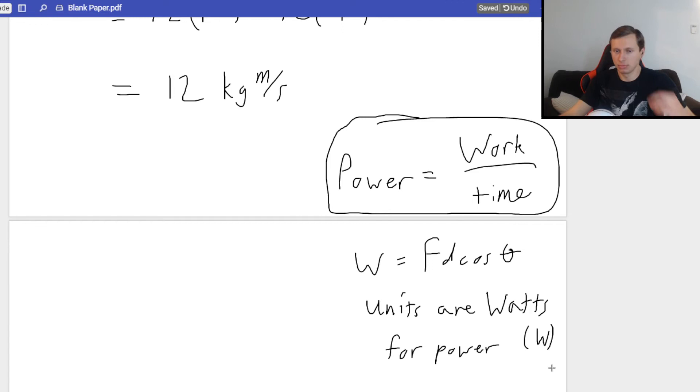Capital W, which is the same variable we use for work. Yes, it's very confusing. Okay, any questions on power? Okay, back to this question for momentum.